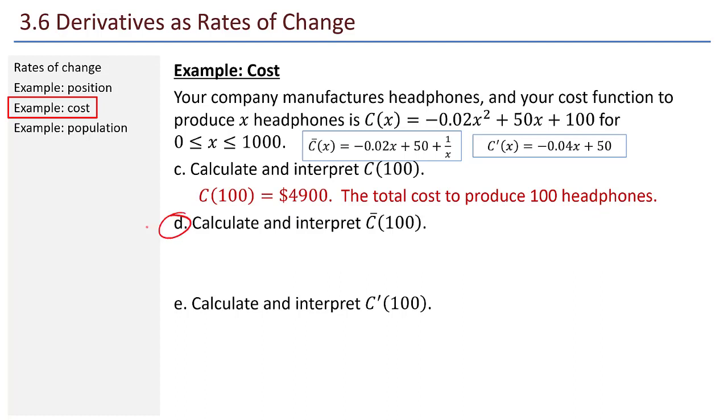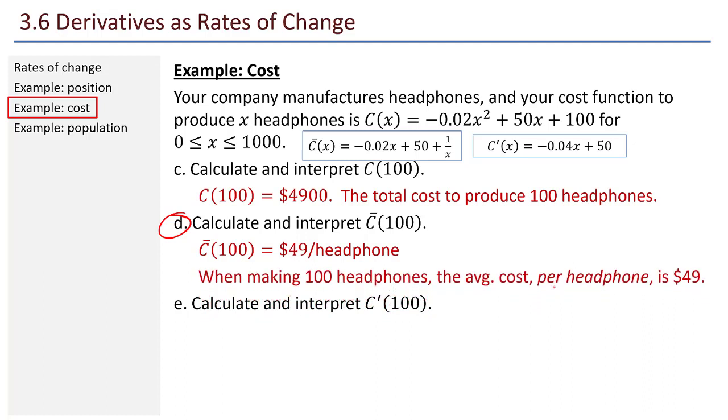Now these things get more interesting. How do I calculate and interpret C̄(100)? I'll plug 100 into the C̄ function, and that ends up being $49 per headphone. So that means when I've produced 100 headphones, then the average cost for each headphone that I've produced is $49. When making 100 headphones, the average cost per headphone is $49.